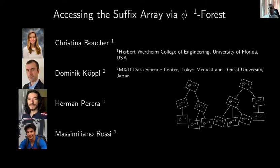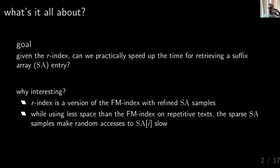Hello everybody. In the following, I want to introduce an alternative way to compute random access on the suffix array when just having the r-index, which we call the phi inverse forest. This is joint work together with Cristina, Hermann, and Marcel Miano from the University of Florida. What we want to do is create a new data structure on top of the r-index that speeds up random access on the suffix array.